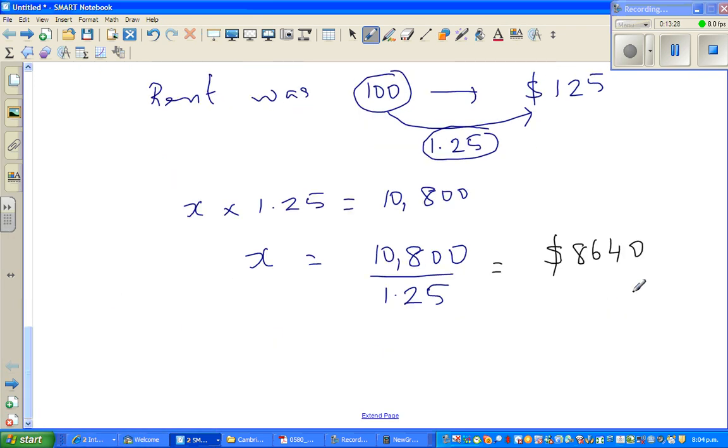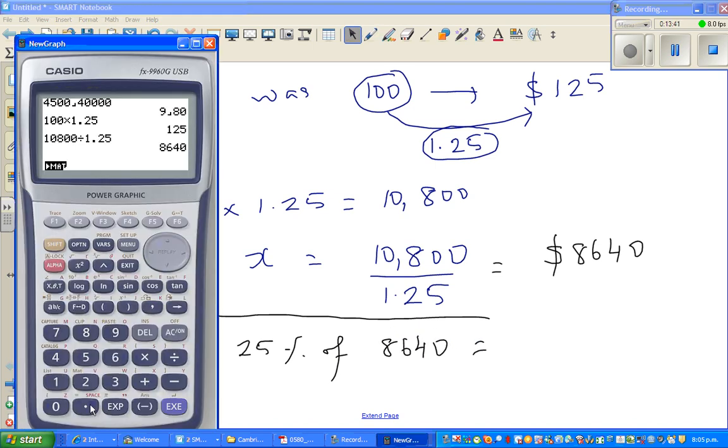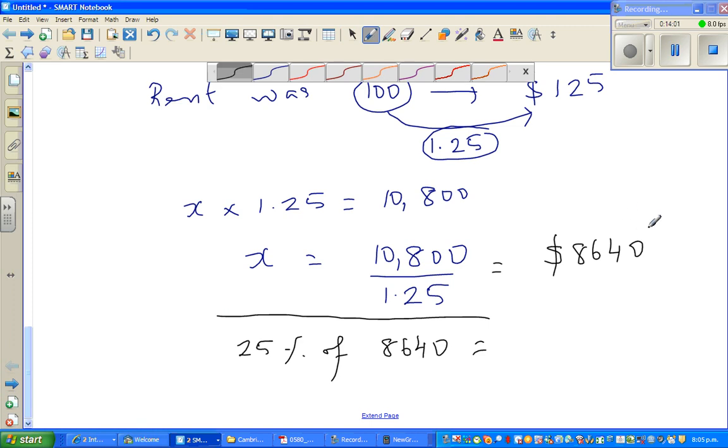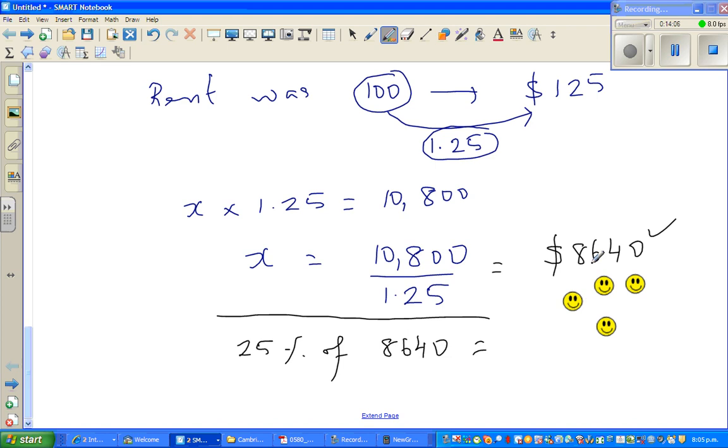So how will we check? You can check this. You times this by 1.25. Or let us check this in a different way. What is 25% of $8,640? That's the increase. So 25% is 0.25 times $8,640, which is $2,160. So $2,160 plus $8,640 is $10,800. So our answer is right. And you can be proud about it. And you can give yourself as many smiley faces. See you in the next video.